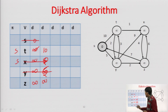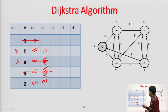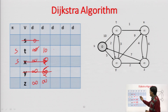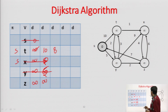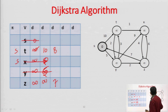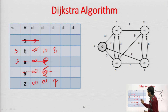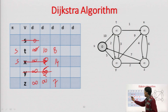Now we delete Y (minimum with distance 5). Looking at all paths from Y: Y to T with cost 3 — Y's own cost is 5, plus 3 = 8, so we update T from 10 to 8. Then Y to Z with cost 5 + 2 = 7. Then Y to X with cost 5 + 9 = 14. Since we explored these vertices through Y, their predecessors change to Y.